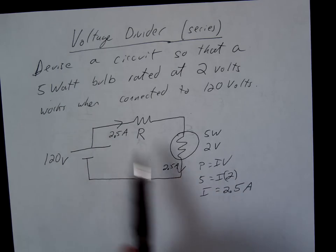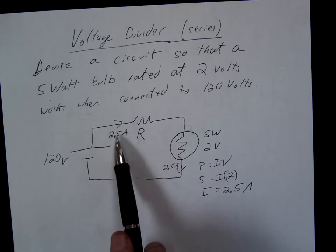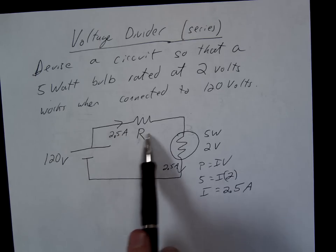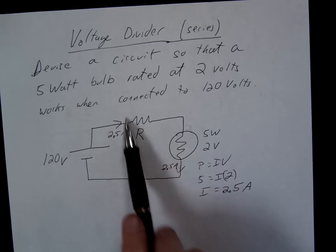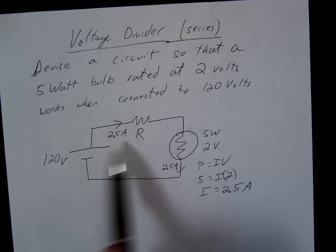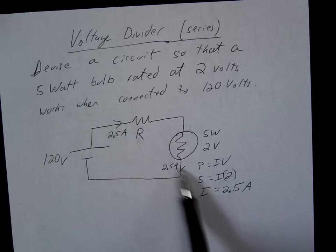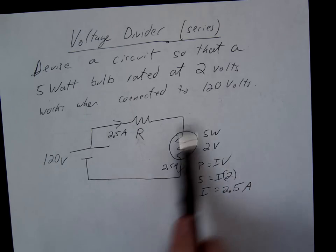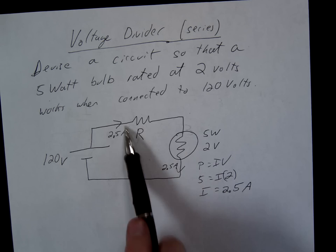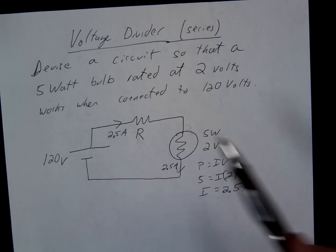So the next thing we want to do is we want to get R. Well, we know the current. What are we missing? The voltage. So we look, okay, this is 120. This is 2. Therefore, we're dividing up the voltage between the two. So how much voltage is this guy going to get? 118.